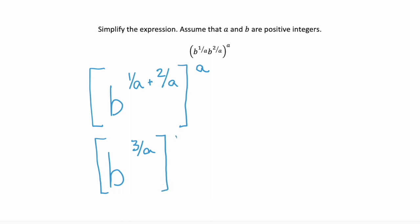And again, it's still raised to the power of a. Now we use the power rule, which says when you have an exponent raised to another exponent, you multiply those exponents.